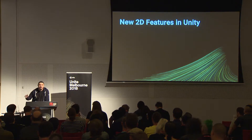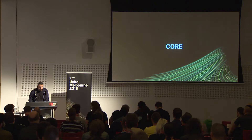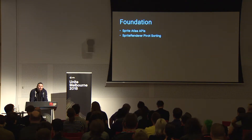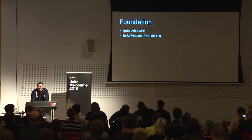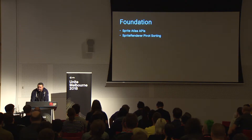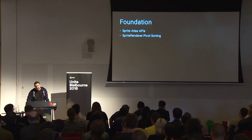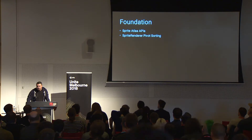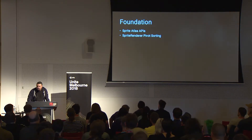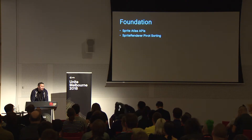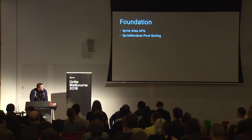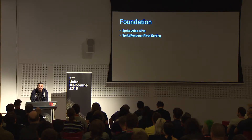As always in 2D, we're going to start with a foundation and build up on all the other layers. For core: one important thing you might have missed — we've added APIs to sprite atlases. If you're using sprite atlases and want control over how and when they get generated, we've added APIs to create and edit them. For the sprite renderer, we've added the ability to sort by pivot, useful when you've got characters or multiple sprites with pivots in interesting places. Today we'll focus on world building, animation, and graphics features.